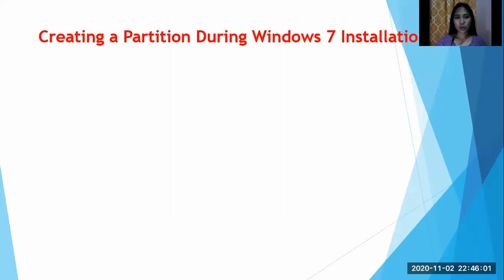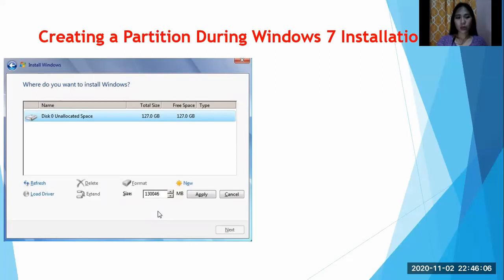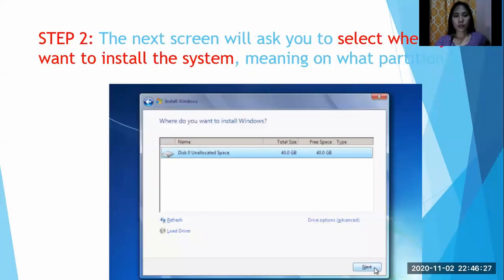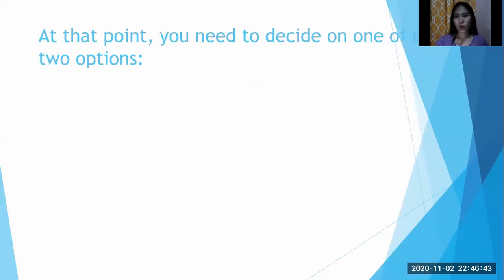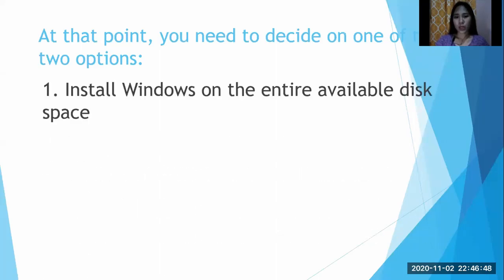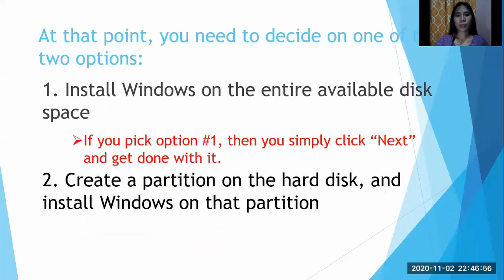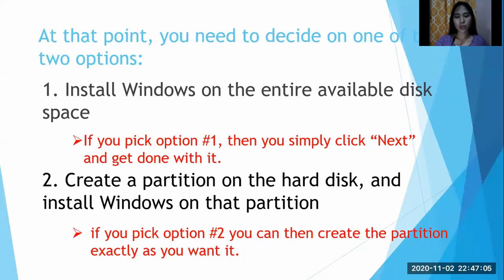In creating a partition during Windows 7 installation, you need to select where you want to install Windows. First, start the Windows 7 installation. After passing the initial screens, you will be asked to select which type of installation to perform — upgrade or custom. The next screen will ask you to select where you want to install the system, meaning on what partition. You then decide between two options: install Windows on the entire available disk space, or create a partition on the hard disk and install Windows on that partition. If you pick option 1, simply click Next. If you pick option 2, you can create the partition exactly as you want it.